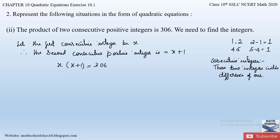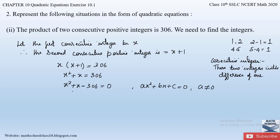Multiplying: x × x = x², and x × 1 = x, so x² + x = 306. Transferring 306 to the left-hand side: x² + x − 306 = 0. This forms a quadratic equation of degree 2 with the coefficient of x² equal to 1. It is of the form ax² + bx + c = 0 where a ≠ 0. This is the required quadratic equation.